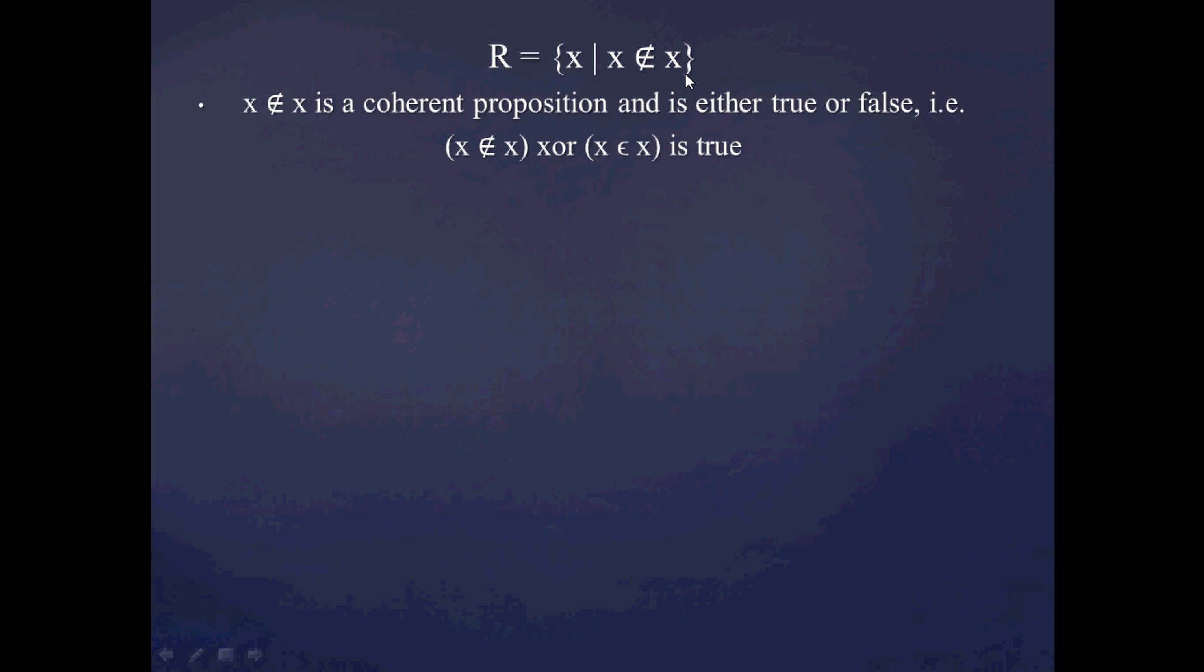And prima facie, this seems like a coherent proposition. x is not an x. It's clearly coherent. It doesn't equivocate or anything like that. And it's either true or false. Either x is not an x or x is an x. And this x or, what I mean by that is the exclusive or, where either this proposition here is true or this one is true. They can't both simultaneously be true or false.